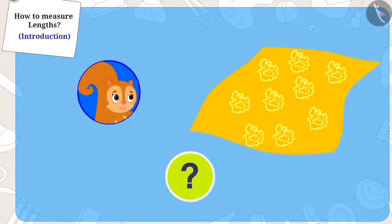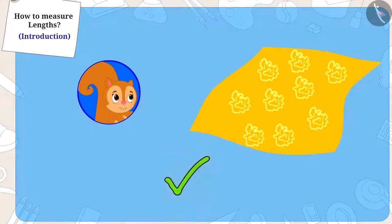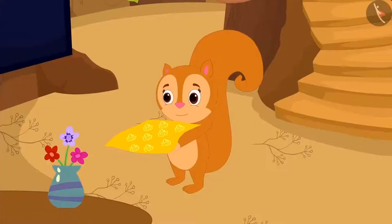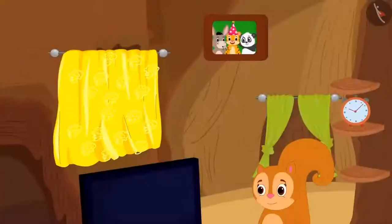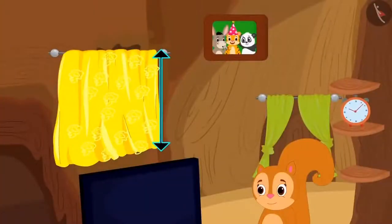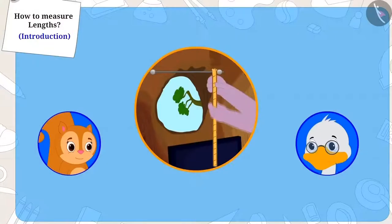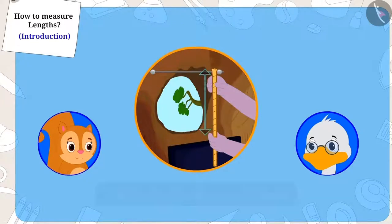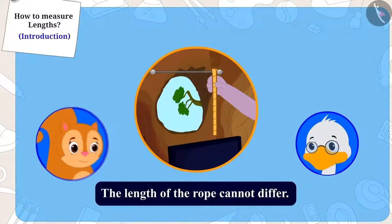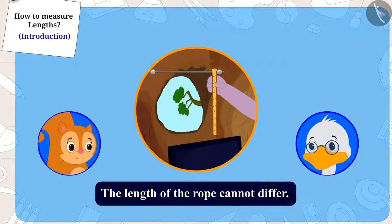Children, was Chanda able to get the exact length of the cloth for her window? Yes, this time when Chanda hung the cloth on her window, it was the exact length of her window. But how did this happen? Appu had measured the length of the window with the help of a rope, and because the length of the rope cannot differ, uncle's and Chanda's measurement became exactly the same.